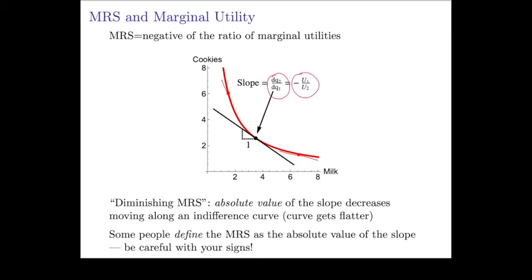So diminishing marginal rate of substitution means that the absolute value of this slope is decreasing — the curve is getting flatter and flatter. It's important to be careful here: some people define the marginal rate of substitution as just the ratio without the negative sign. In this course, I'm going to use minus U1 over U2 as the marginal rate of substitution.